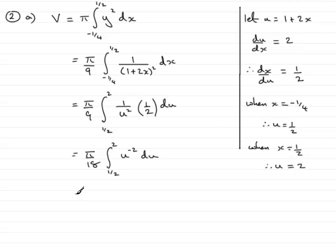In the usual way, we would add 1 to the power and divide by the power in integrating u to the minus 2. So integrating that, adding 1 to the power gives u to the minus 1, and dividing by minus 1 would give minus 1 over u, because u to the minus 1 is 1 over u. So we close that bracket off, and that's going between 1 half and 2.